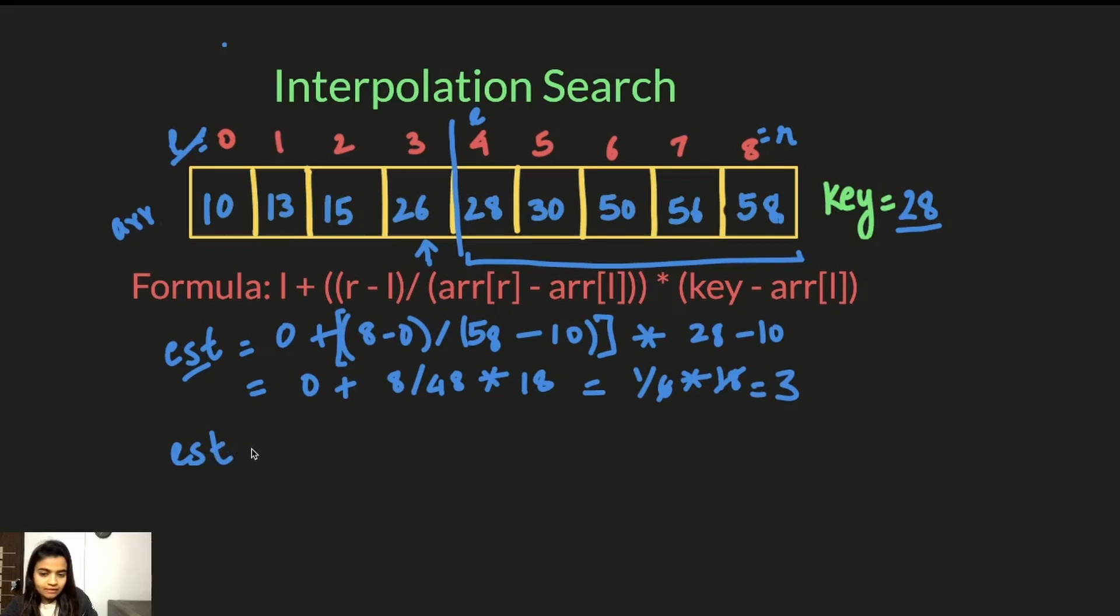So the second estimated index is now L which is 4 plus right which is 8, R, minus L, 28 which is 4 now divided by array of right is 58 minus 28 which is array of left, array of 4, 28 into key which is 28 minus array of left, array of 4 is 28.